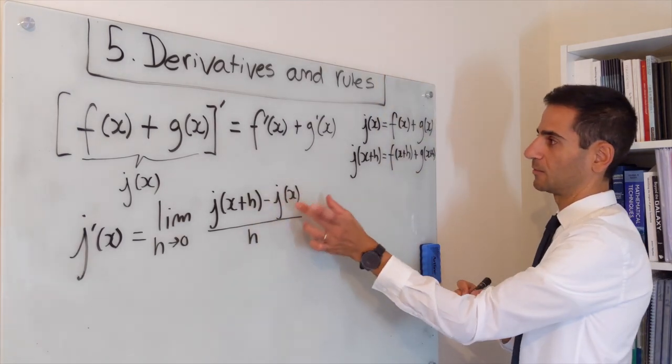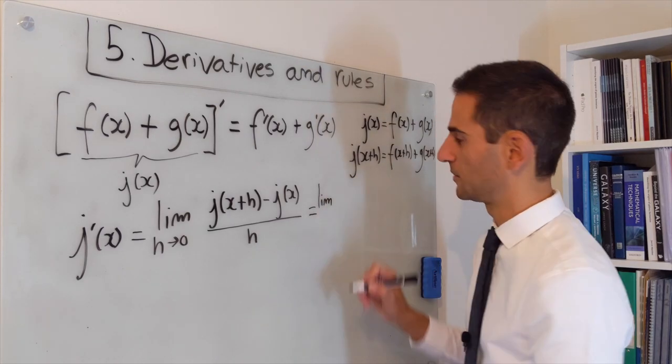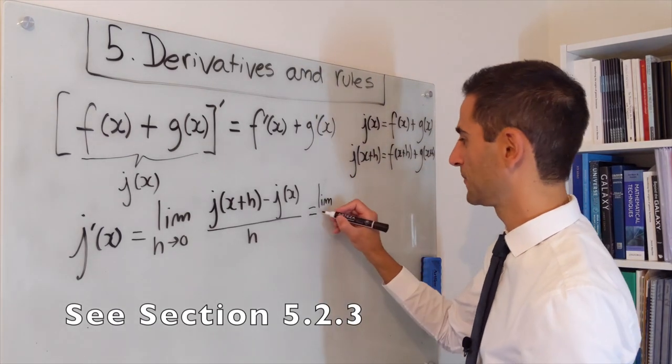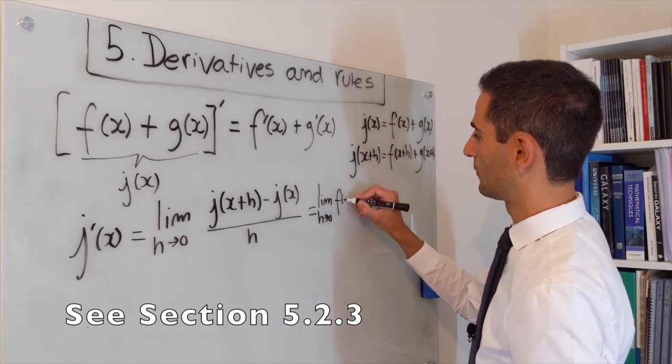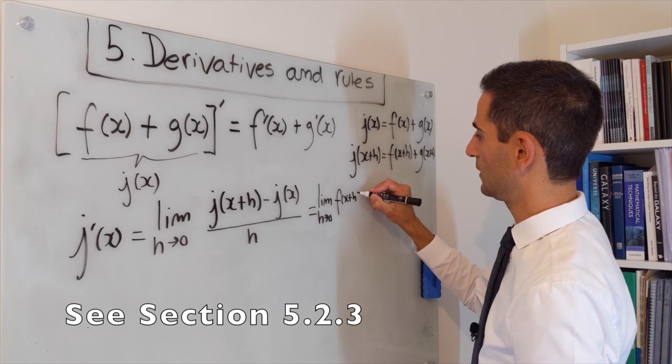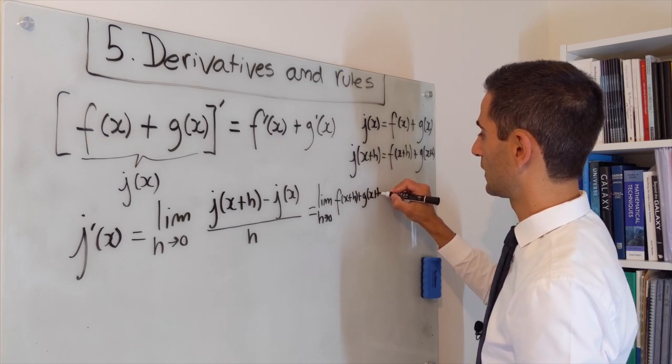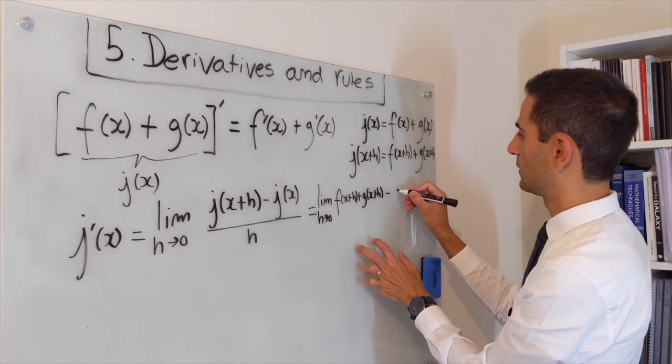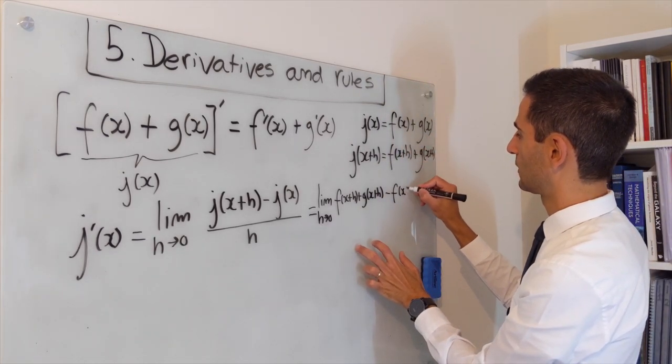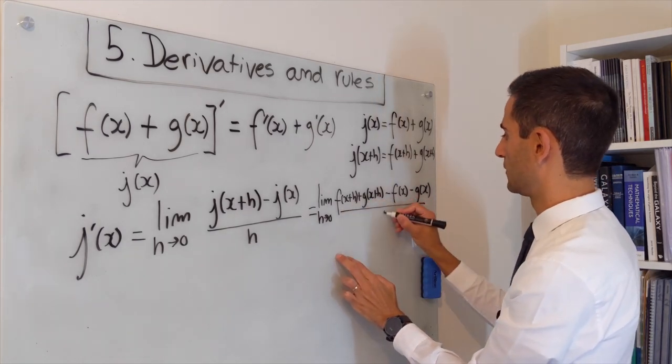So this is what we're going to plug in here. We can write this as the limit, and I'm going to try to be compact so it actually fits, h goes to zero of f of x plus h plus g of x plus h. This component minus f of x minus g of x divided by h.